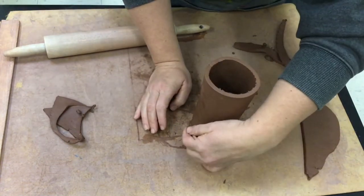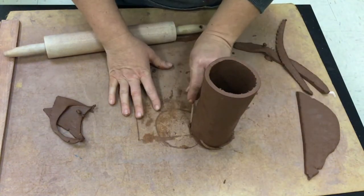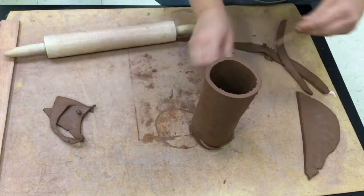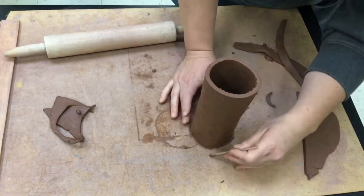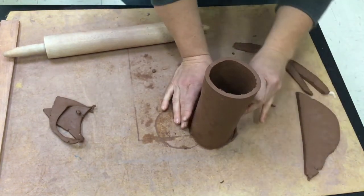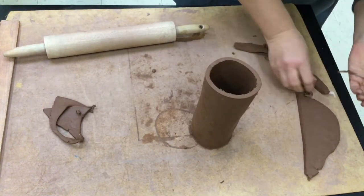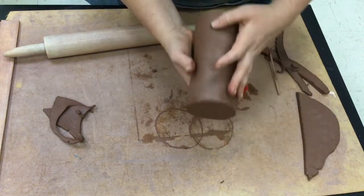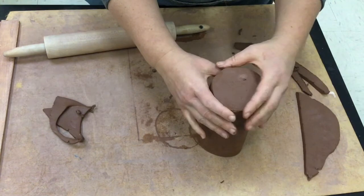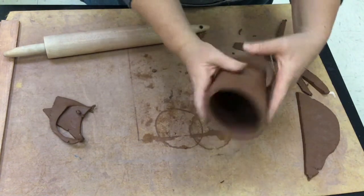Instead of smearing that up you're going to take your wooden stylus and you're just going to carefully cut that off. You can go all the way around your piece if you need to, to make a nice clean edge. And when you do that it sort of helps get rid of that seam. So now I have one side done. I'm going to repeat and do the other side.